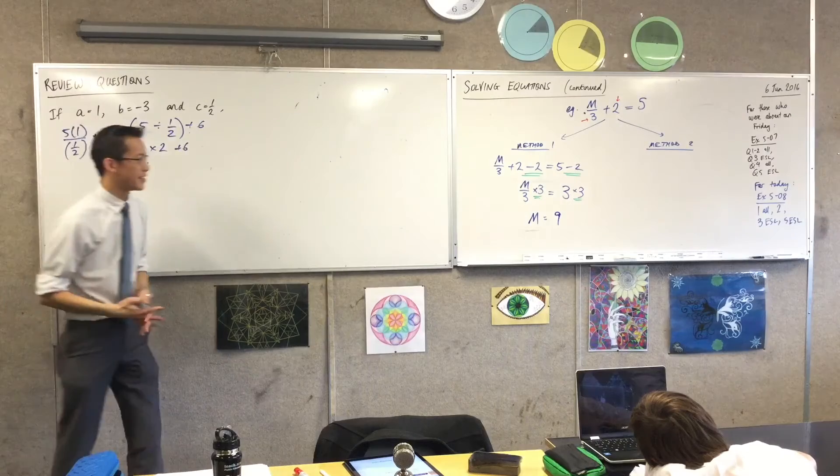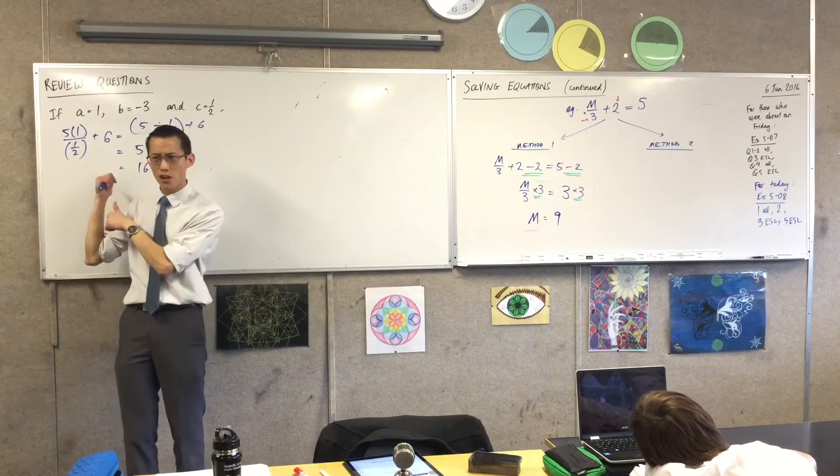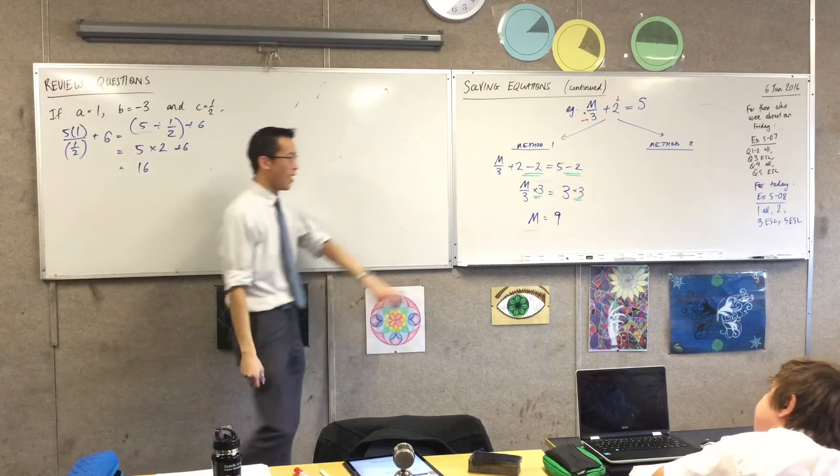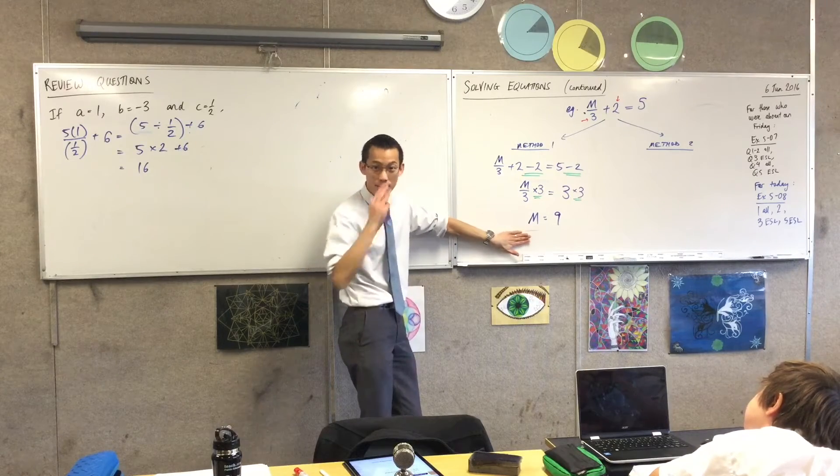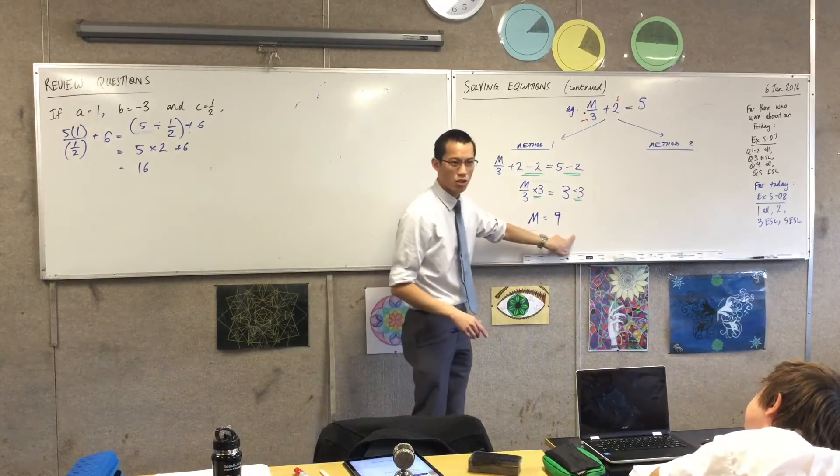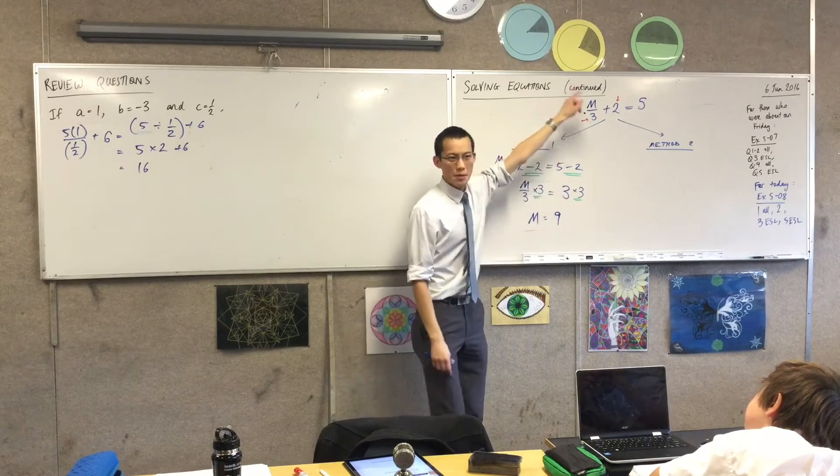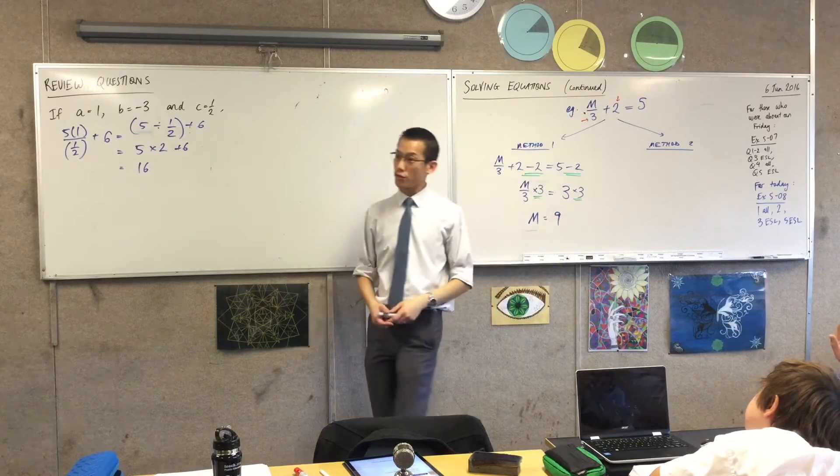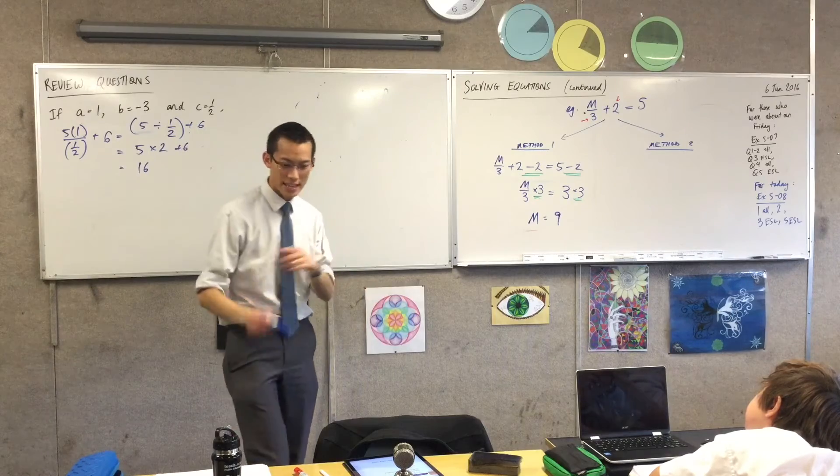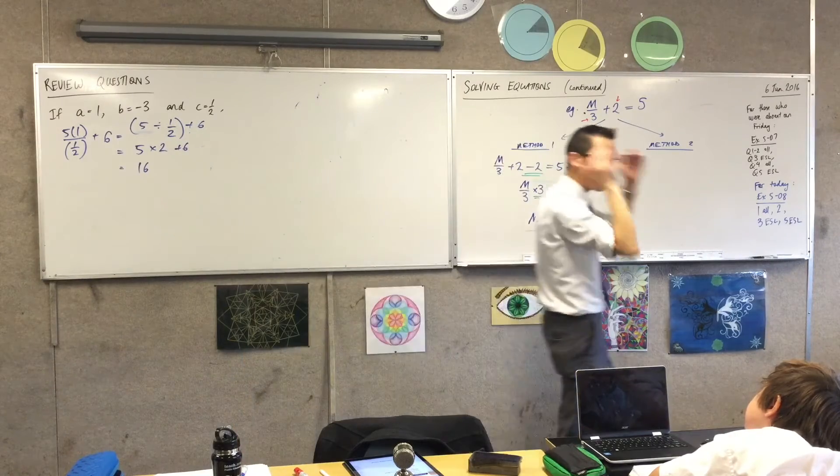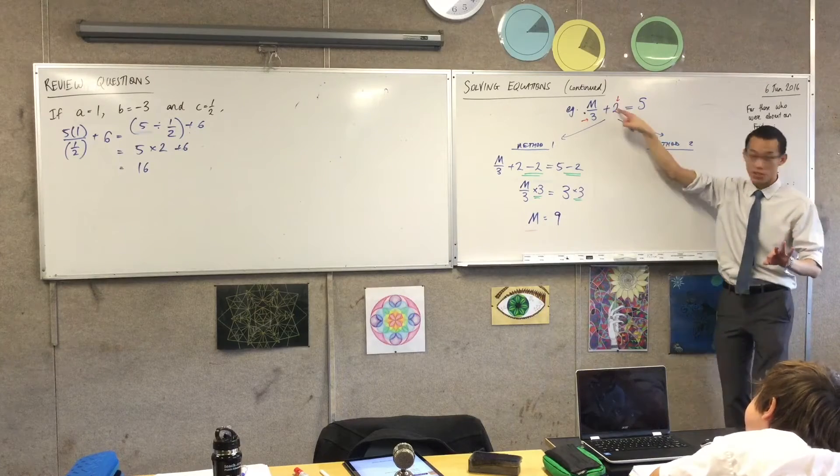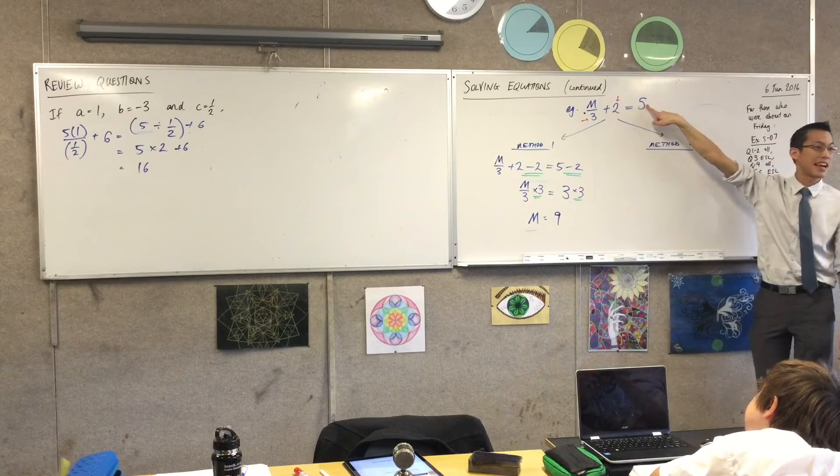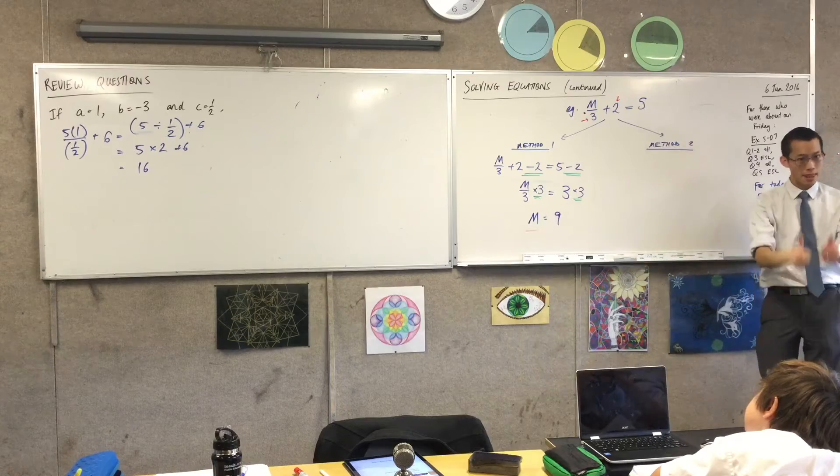Now what's lovely about this is, remember all this practice work we did on substitution? I can use that to check if I got this right. You never need to doubt. We think M is equal to nine. Let's have a look at where we started. Is it true? Does it work? Yes, it does. Here's how we know. You can substitute this in your head, it's easy enough. What's nine divided by three? Three. Plus two? Five. Perfect, that's exactly what I want. Thumbs up.